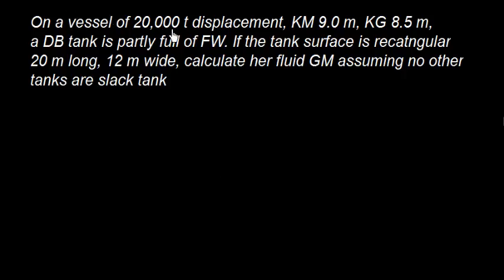On a vessel of 20,000 ton displacement, KM 9 meters, KG 8.5 meters, a DB tank (double bottom tank) is partly full of FW (fresh water). If the tank surface is rectangular, 20 meters long, 12 meters wide, calculate her fluid GM assuming no other tanks are slack tanks. That means no other tanks are partly filled - they are either empty or completely filled.